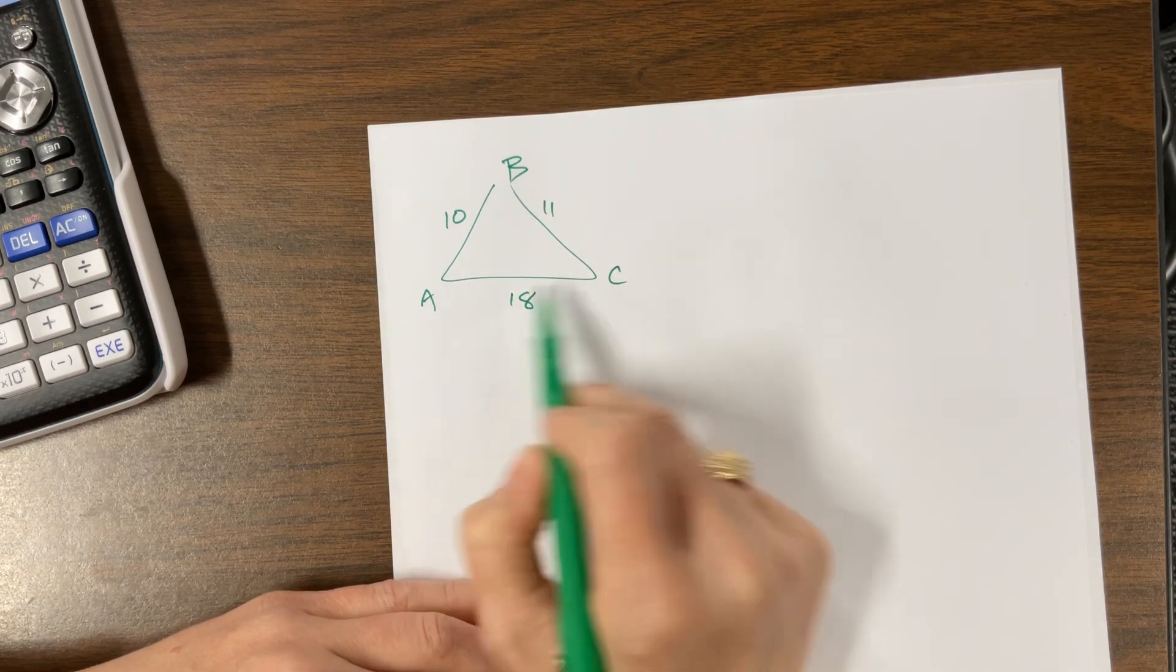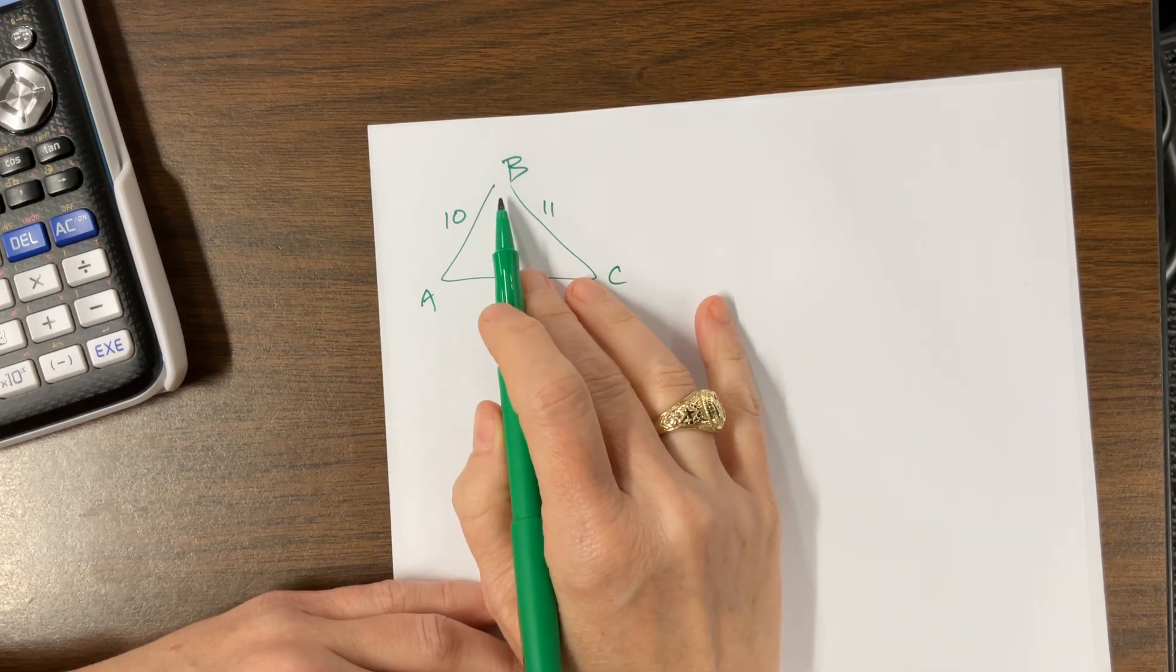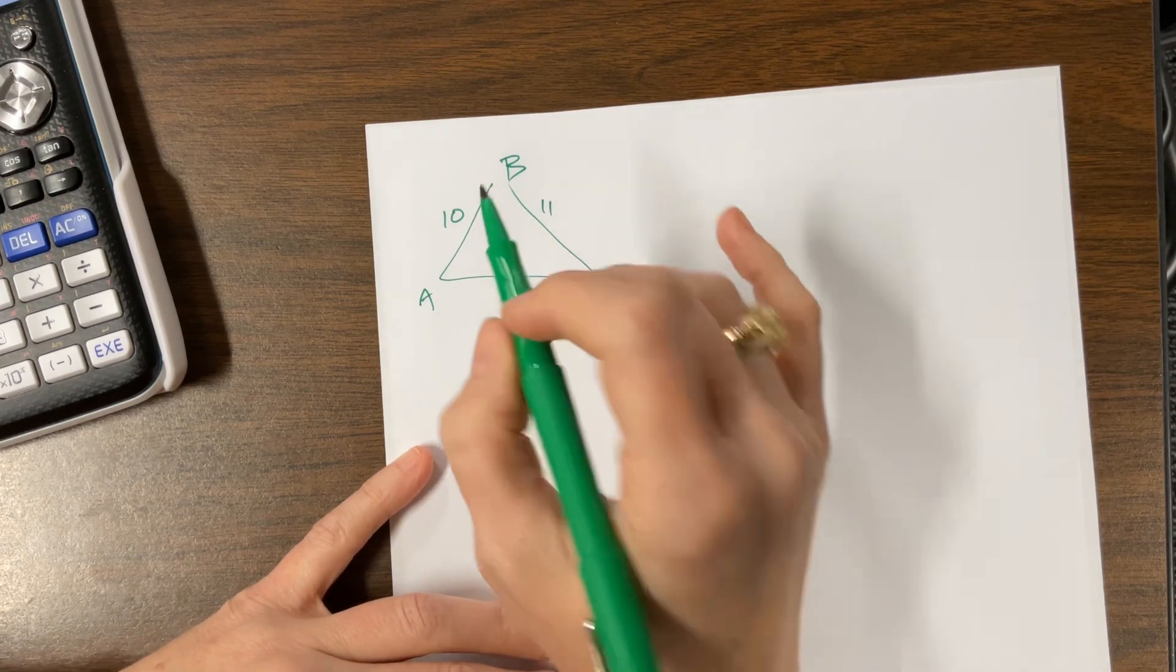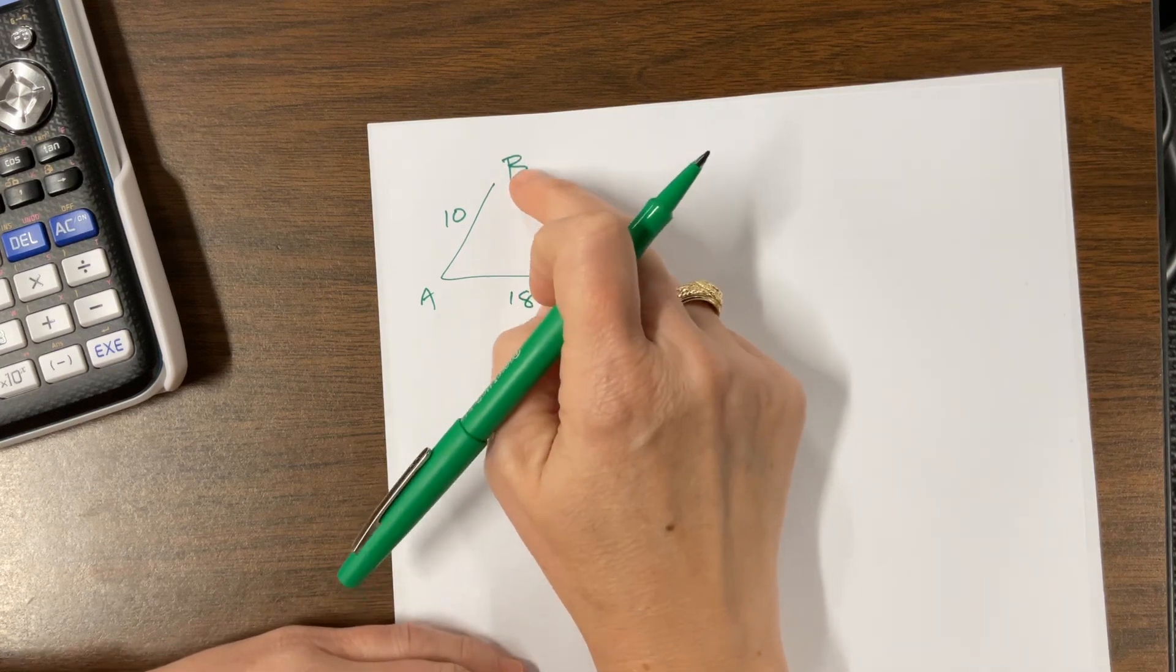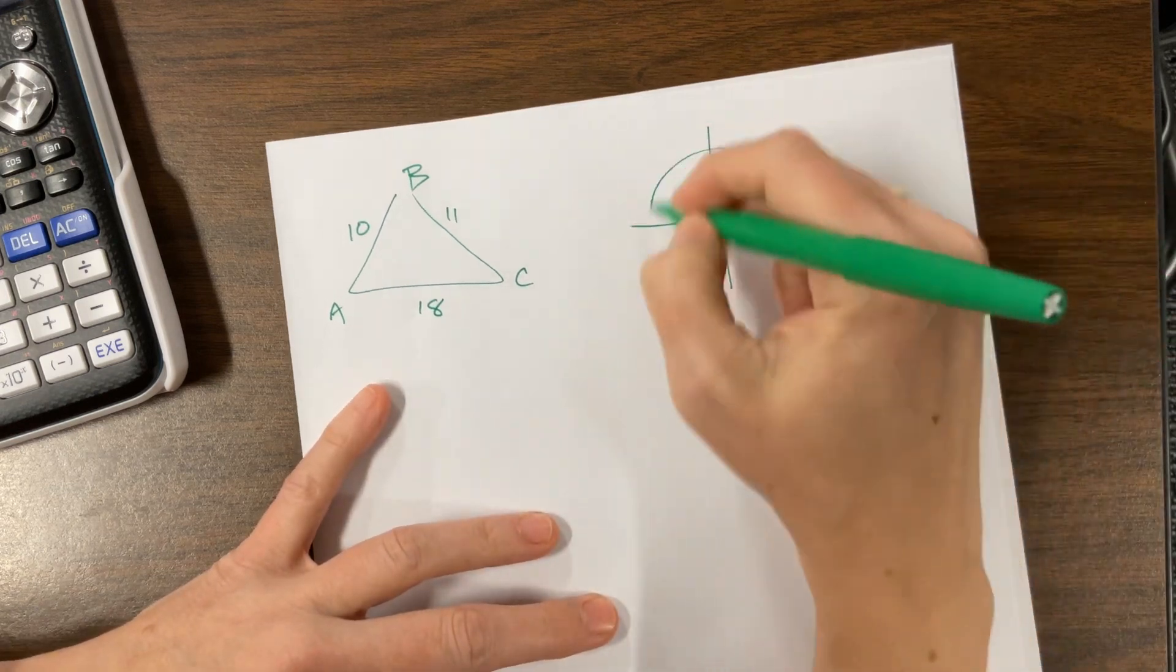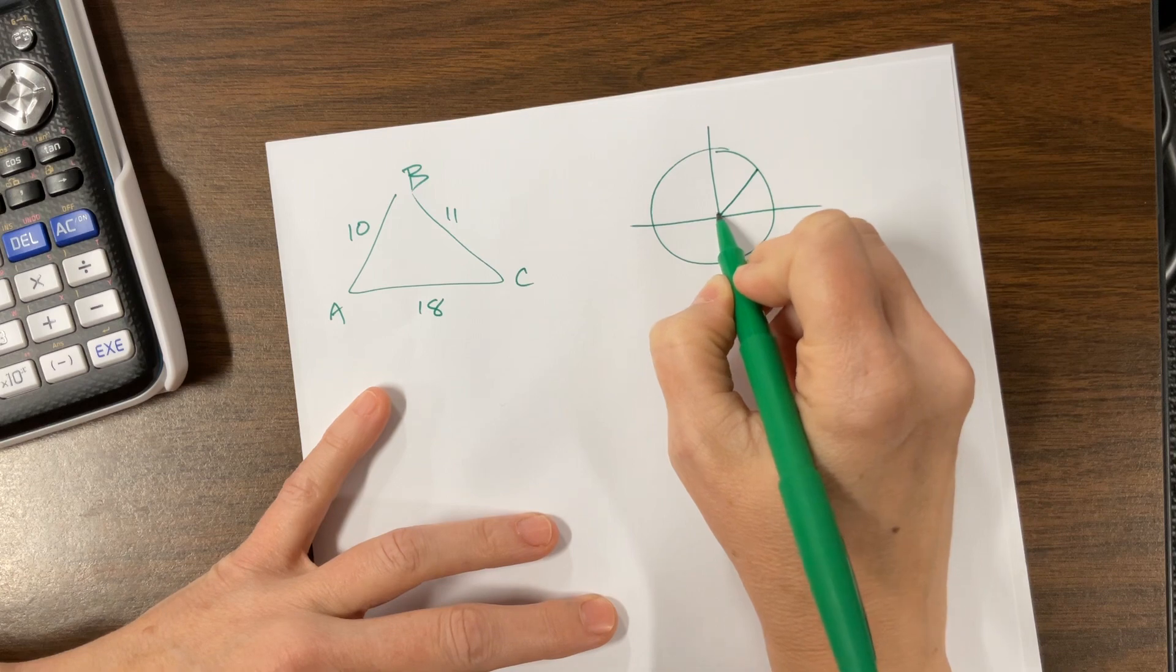So notice that the longest side here is, this is not drawn to scale, but the longest side is 18, and so the largest angle is going to be angle B. So if I find angle B, then if B is obtuse, the law of cosine will find that for me, and then I can just keep going and find A and C. What I'm talking about, think unit circle. If I have an angle and it's supplement, so this is angle X, and then this one that got us all the way to here is the supplement of that.